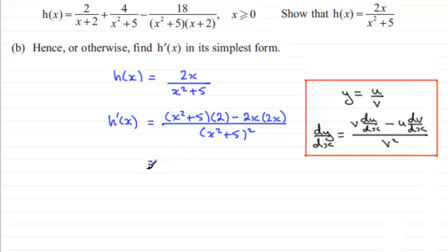plus 10 and then we've got minus 4x squared. And again all that is divided by the denominator all squared. There's no need when using the quotient rule by the way to ever expand the denominator.